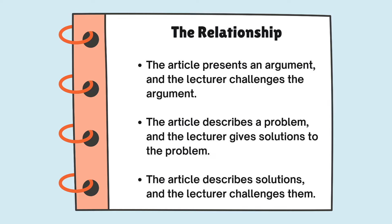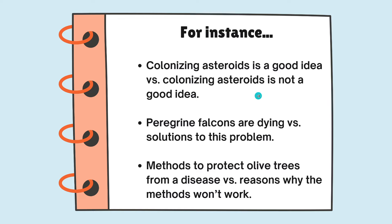So the relationship is always adversarial — they always have opposing opinions. There's never one where the article presents an argument and the lecturer agrees with it or expands on it. That's not on the test. For example, you could get one where the article says colonizing asteroids is a great idea, but then the lecturer comes on and says no, colonizing asteroids is not a good idea. Or you could get one where the article says there's a big problem — all the peregrine falcons are dying — and then the lecturer comes on and says we've got some solutions to this problem.